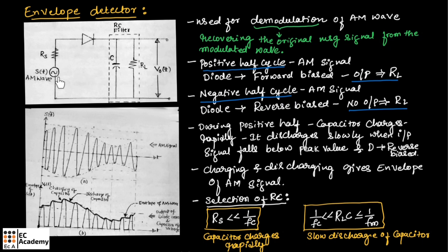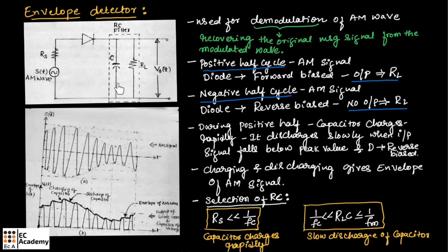This figure shows the envelope detector circuit. It consists of a diode and a RC filter. This circuit is also known as diode detector — it is known as envelope detector and also known as diode detector. Now let us understand the operation of this circuit.